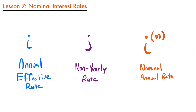Then we have our non-yearly rates that we denote with the letter j, and these are rates that are compounded multiple times per year, such as a quarterly rate or a monthly rate, but they could also be rates that take place over periods larger than a year, such as a two-year rate that compounds every two years.